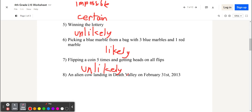An alien cow landing in Death Valley on February 31st, 2013. This is impossible, because there is no such thing as February 31st. February only has 28 days, and also 2013 is in the past.